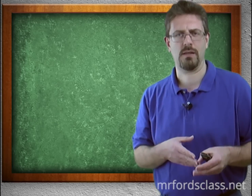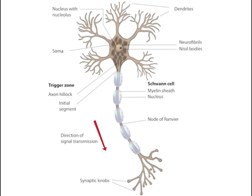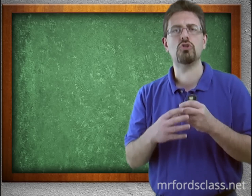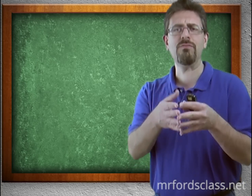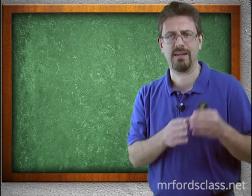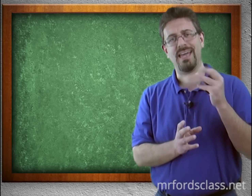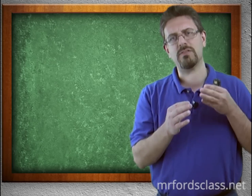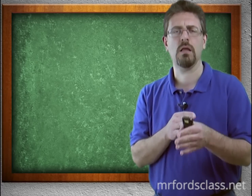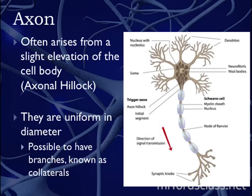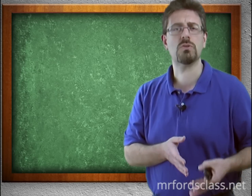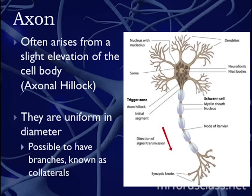Then we have the axon — the tail of the neuron. This is where the signal travels down; it propagates the signal down the neuron to wherever it's supposed to go. A dendrite receives the information and passes it down an axon toward its destination. Axons are long cell processes that can stretch over long distances — you can have an axon going from your head all the way down to your feet. They often arise from a slight elevation of the cell body called the axon hillock, are uniform in diameter, and can have branches called collaterals.